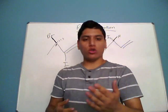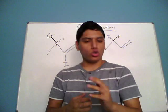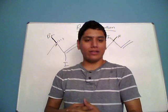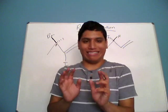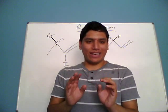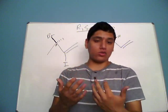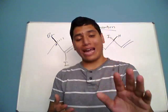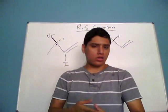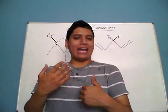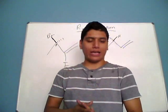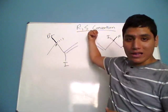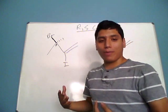You might have heard the right hand rule when talking about torque or electricity in physics, or in multivariable calculus. But in this case, the right hand rule isn't really that complicated when you're dealing with it in organic chemistry. So how does the right hand rule work, and how do we apply it when dealing with the R or S convention of naming compounds?